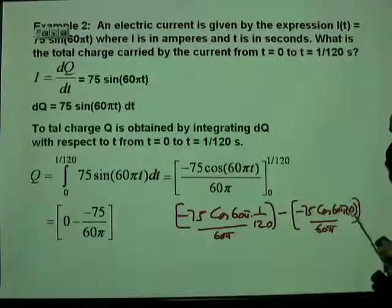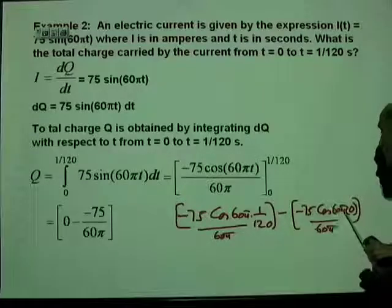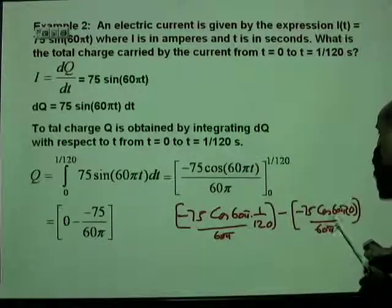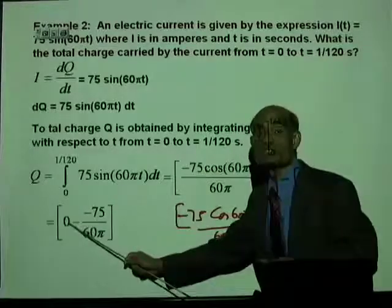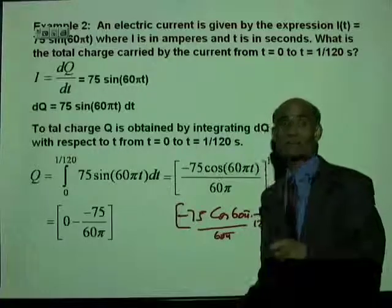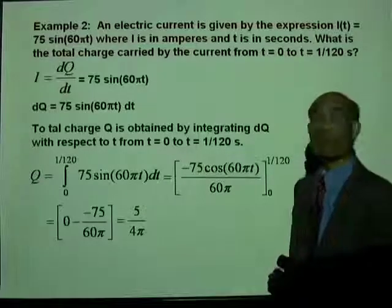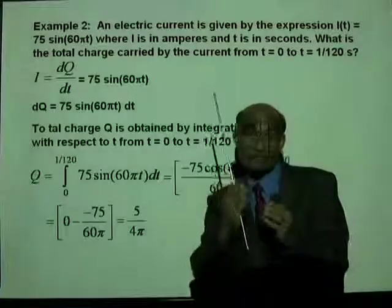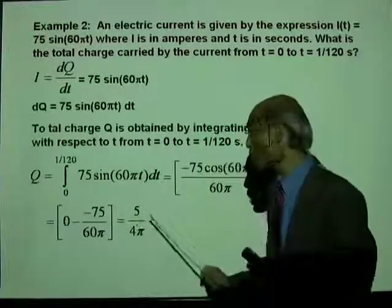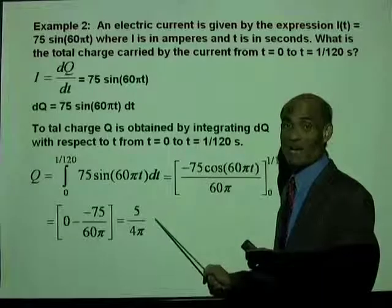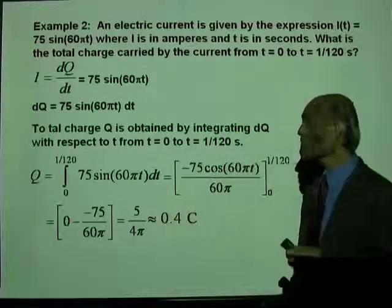For the lower limit, when T is zero, 60 pi times zero is zero, and cosine of zero is one. So that term becomes negative 75 divided by 60 pi. The full expression is zero minus negative 75 over 60 pi, and the two negatives become positive, giving five over four pi. The total charge is five over four pi coulombs, which is approximately 0.4 coulombs.